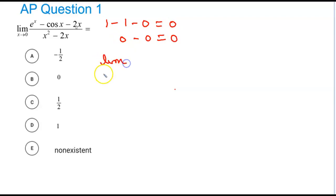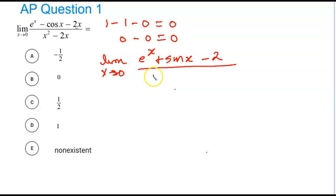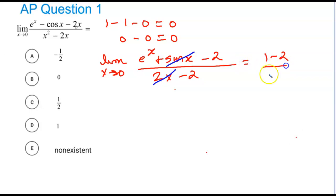Taking the derivative, I get e^x plus sin(x) minus 2 all over 2x minus 2. Plugging in 0 gives 0 in the denominator again, so applying L'Hôpital's rule again, I end up with e^0 which is 1, minus 2, over negative 2. That reduces to positive 1/2.